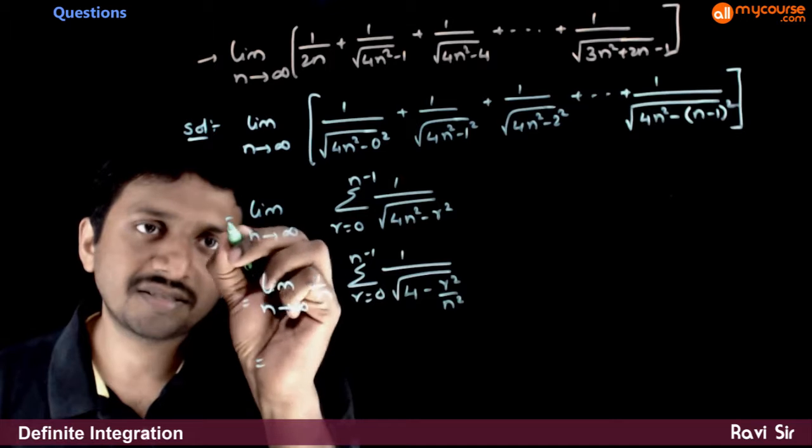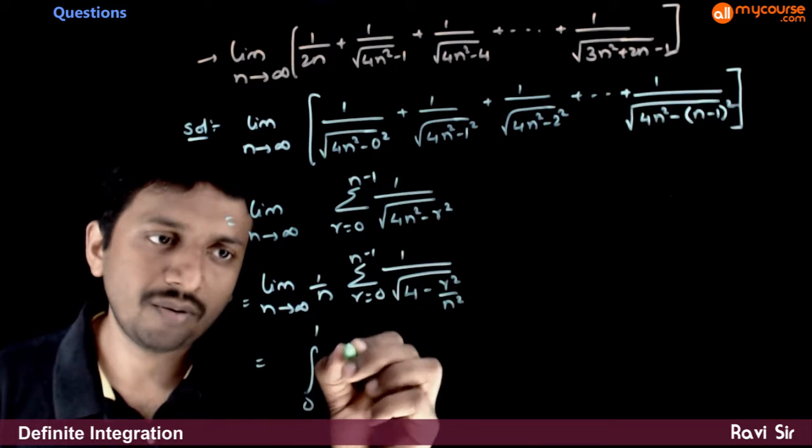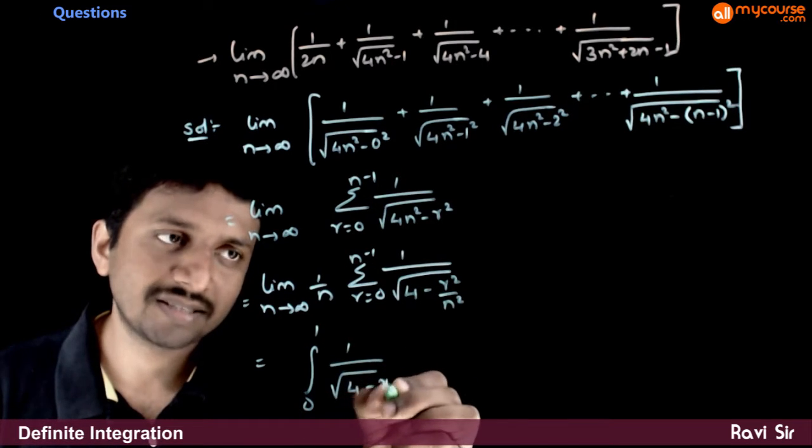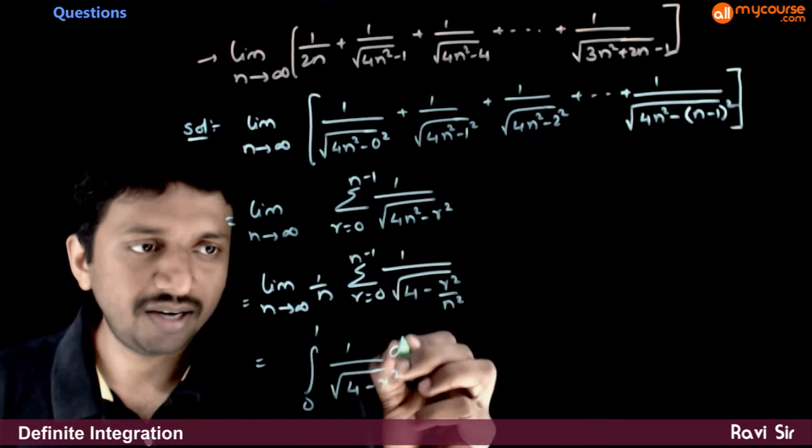This can be written as integration 0 to 1, 1 by root of 4 minus x square dx.